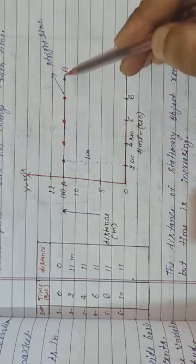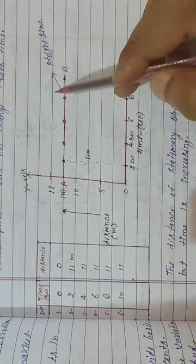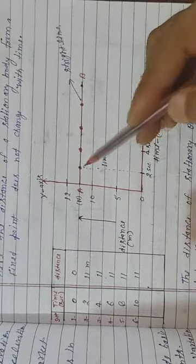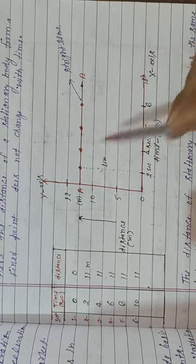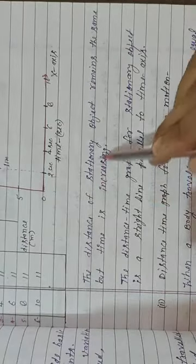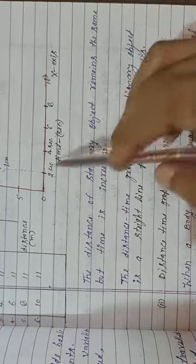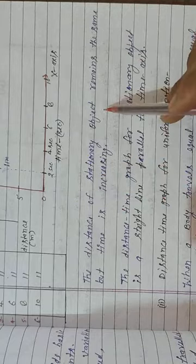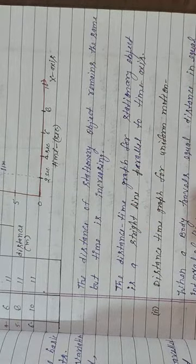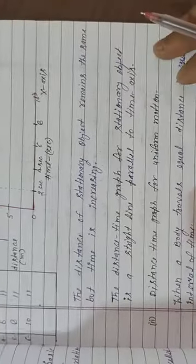So this body is moving in this way. The distance of a stationary body from a fixed point does not change with time — distance remains 11 meters. Time is changing but distance is not changing. The distance of a stationary object remains the same but time increases. Therefore, the distance-time graph of a stationary object is a straight line parallel to the time axis.